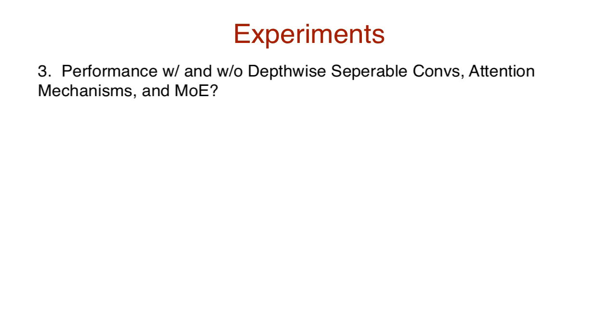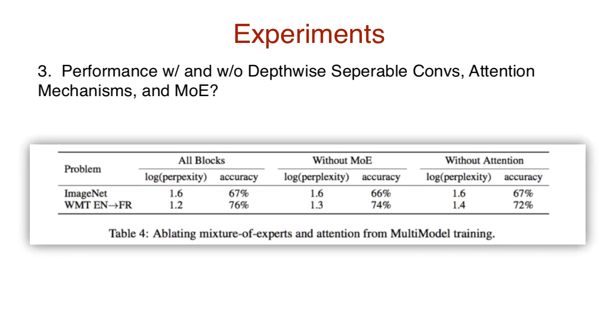Question 3: How do the different computational blocks discussed before influence the different tasks? To answer this question, we compare the performance of multi-model neural network, the network without the mixture of experts, and the network without the attention mechanism. Since MOE and attention help in neural machine translation, let's check out the performance of English-to-French translation and see how it's affected. We'll also include the comparison with ImageNet.